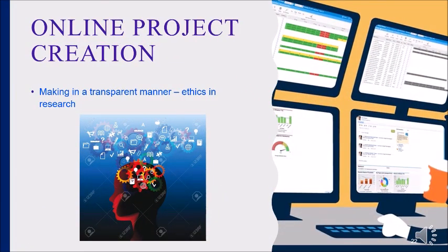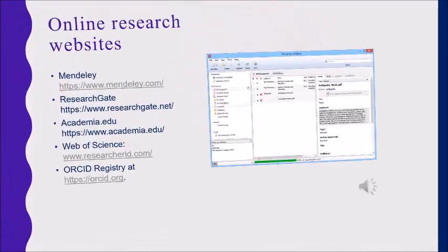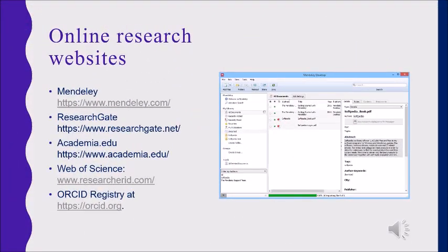The next stage is creating your project online. This helps to create more insights for writing. You can get feedback from other researchers. You need not post all the methods you are using in the research, but post the type of data and how you will get the conclusion. This is an example from Mendeley — create your research profile and include a curated list of your publications and affiliations. Mendeley makes it easy to promote your work to one of the world's largest scientific communities.